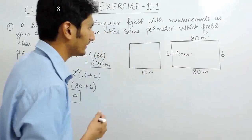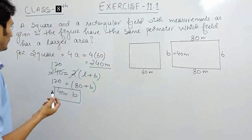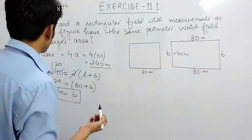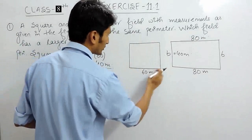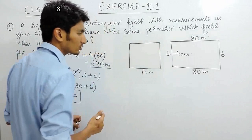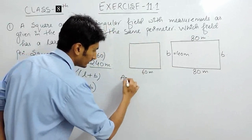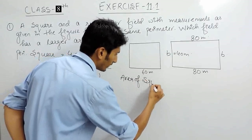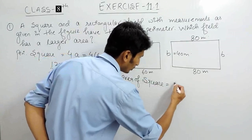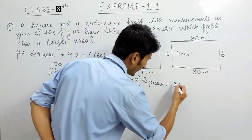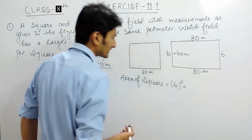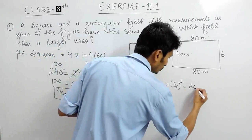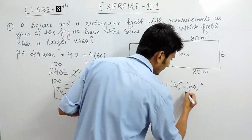Now we have to find the area of these two fields. First, let's find the area of the square field. We know that area of a square is equal to side squared. Here the side is 60 meters, so the area is 60 squared.